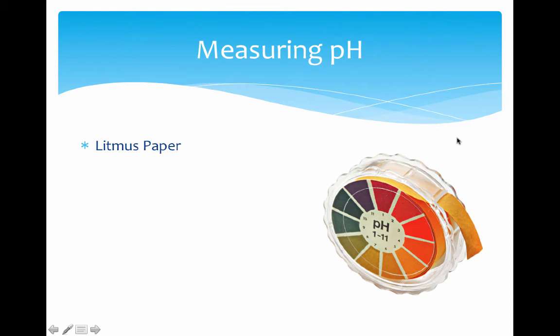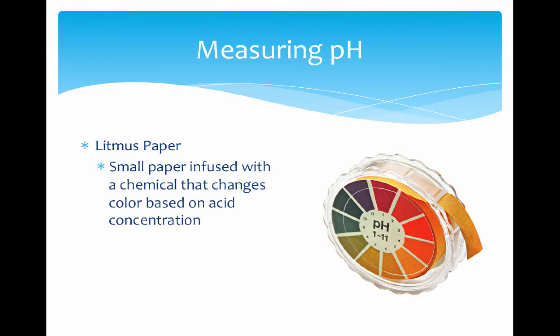Before we get into example problems, we'll talk briefly about how pH is actually measured in the lab. One of the simplest ways is using litmus paper. This is basically a small piece of paper infused with a chemical that changes color based on acid concentration. These typically come with a measuring scale for color comparison, shown on the container. This pH paper can measure from pH of 1 up to pH of 11. You would dip a piece in your solution, match it color-wise, and that gives you a general idea of your pH.